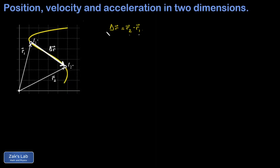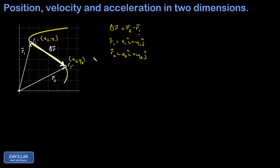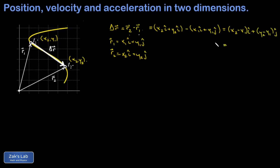We can put each of these position vectors into component form: r1 equals x1 i-hat plus y1 j-hat, and r2 equals x2 i-hat plus y2 j-hat. Expanding the displacement into components and combining like terms, we get x2 minus x1 i-hat plus y2 minus y1 j-hat. Using delta notation — where delta always means final minus initial — we can write this as delta x i-hat plus delta y j-hat. The displacement vector in two dimensions is just the x displacement in the i-hat direction added to the y displacement in the j-hat direction.